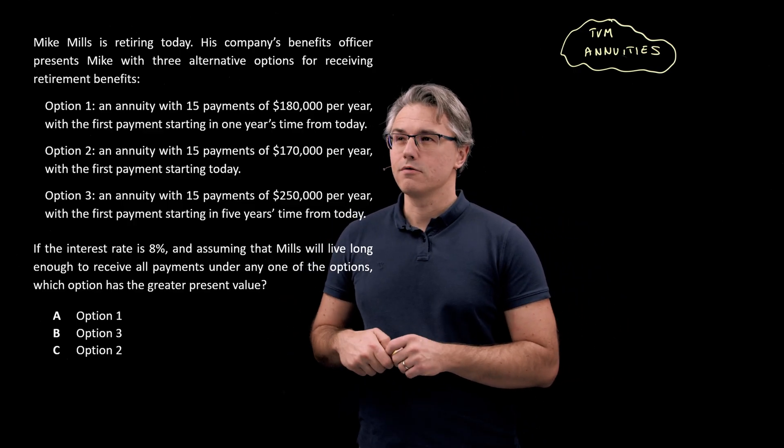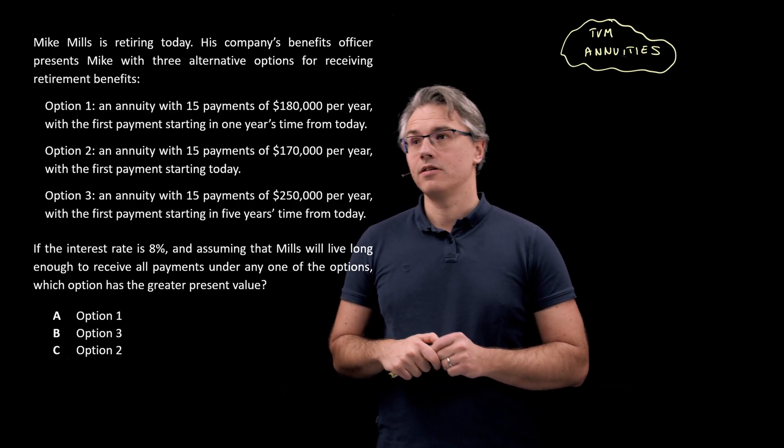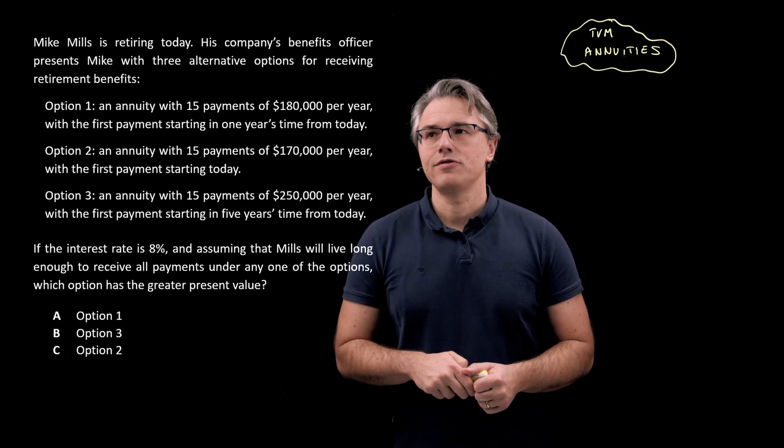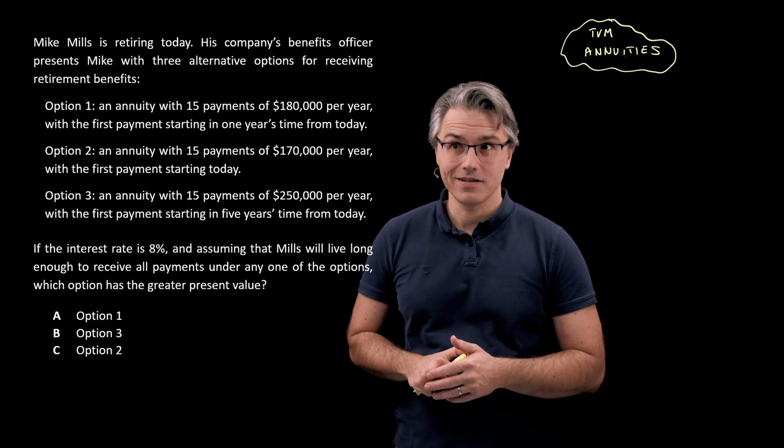Option two: an annuity with 15 payments of $170,000 per year with the first payment starting today. And the third one: 15 payments of $250,000 per year with the first payment starting in five years' time from today.